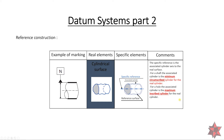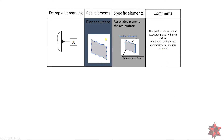This is according to ISO 5459. Now, if the example is a plane — a surface — the real element is the planar surface. The specific element is the associated plane to the real surface, which is the specific reference. It is a plane with perfect geometrical form and it is tangential, so when you construct a datum like this with a plane, you have to make it tangential.